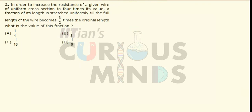In order to increase the resistance of a given wire of cross-section area to 4 times its value, a fraction of its length is stretched uniformly till the full length of the wire becomes 3/2 times the original length. What is the value of this fraction?